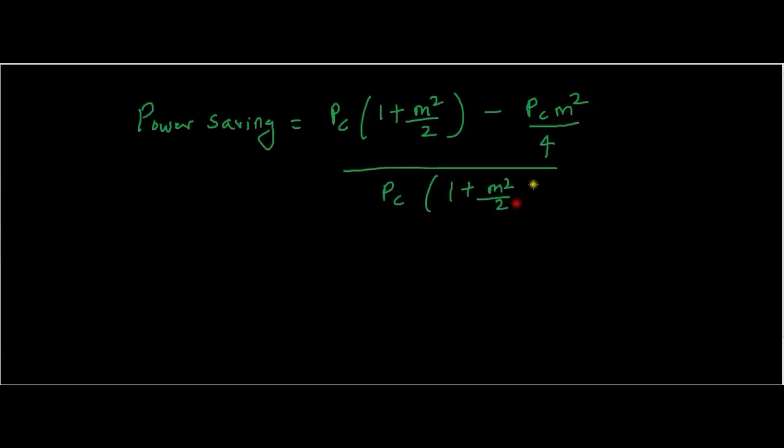Power Saving equals PC(1 + m²/2) minus PC·m²/4, all upon PC(1 + m²/2).